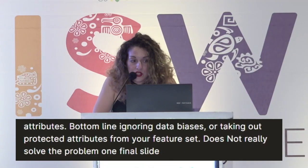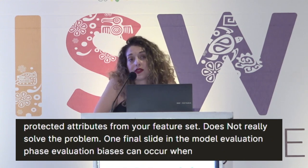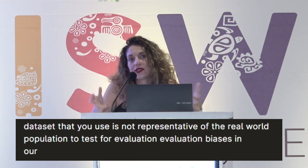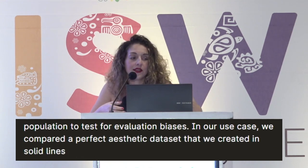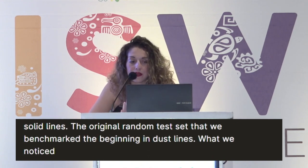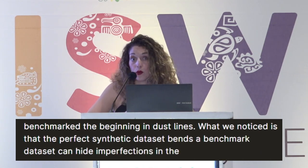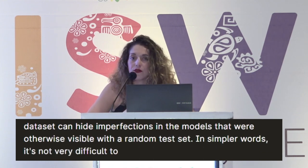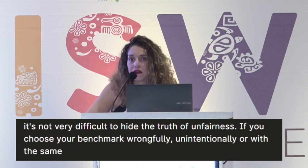In the model evaluation phase, evaluation biases can occur when the benchmark dataset you use is not representative of the real-world population. To test for evaluation biases, we compared a perfect synthetic dataset — shown in solid lines — with the original random test set we benchmarked initially, shown in dashed lines. We noticed that a perfect synthetic benchmark dataset can hide imperfections in the trained models that were otherwise visible with a random test set. In simpler words, it's not very difficult to hide the truth of unfairness if you choose your benchmark wrongfully, unintentionally, or with deceitfulness — and that is dangerous.